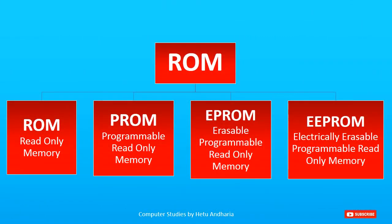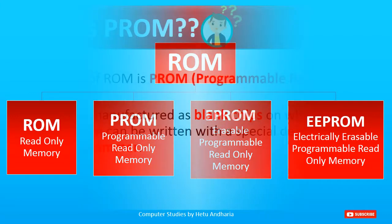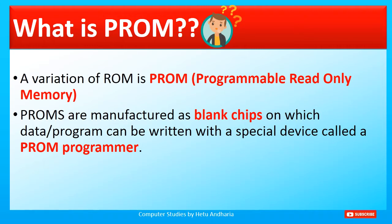ROM can be classified into four types: first, Simple ROM (Read-Only Memory); second, PROM (Programmable Read-Only Memory); third, EPROM (Erasable Programmable Read-Only Memory); and fourth, EEPROM (Electrically Erasable Programmable Read-Only Memory). I already explained Simple ROM, so now we will understand the second type — PROM.